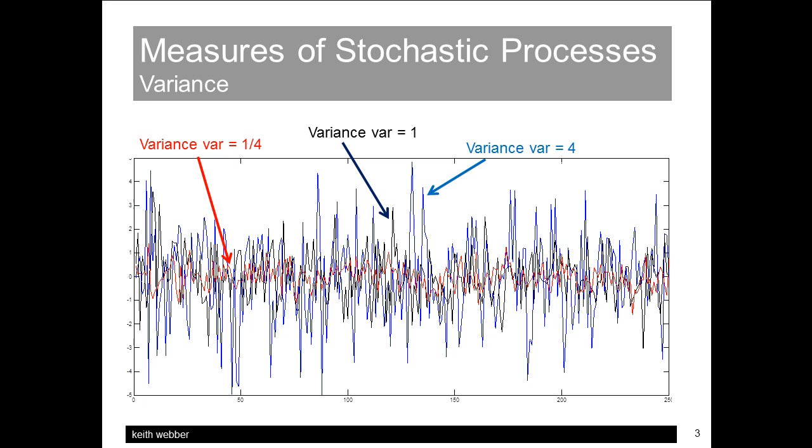In video 3 we looked at variance. It's a useful measure of the size of a noise signal. It's the expected or average value of the square of the signal measured in units such as volts-squared.